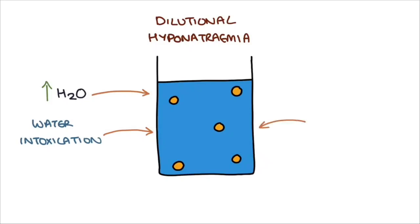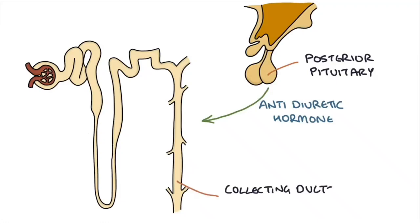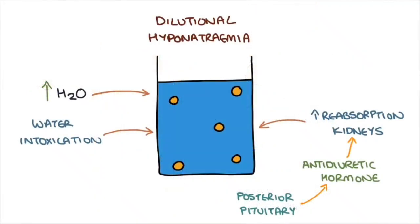Another way to add water is by increasing the reabsorption of water in the kidneys. If you remember, a hormone called antidiuretic hormone from the posterior pituitary gland acts on the collecting ducts in the kidneys to increase water reabsorption from the urine back into the blood. Therefore, if you add more antidiuretic hormone, more water is reabsorbed into the blood and the sodium concentration will become more dilute again.